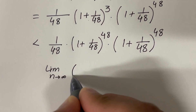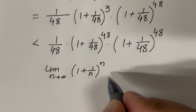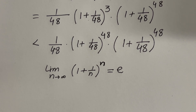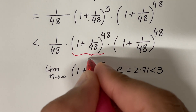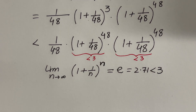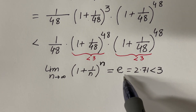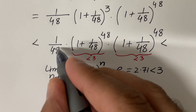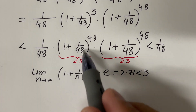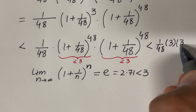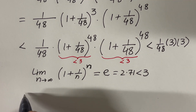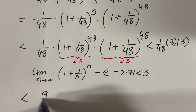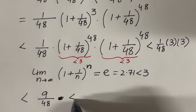We know that the limit as n approaches infinity of (1 + 1/n) raised to the power n equals the number e, which is approximately 2.71 — an irrational number that is less than 3. Since this function is increasing and its maximum approaches e which is less than 3, both (1+1/48)^48 and (1+1/48)^3 are less than 3. Therefore the whole expression is less than 3 times 3 equals 9, divided by 48, and 9 divided by 48 is less than 1.